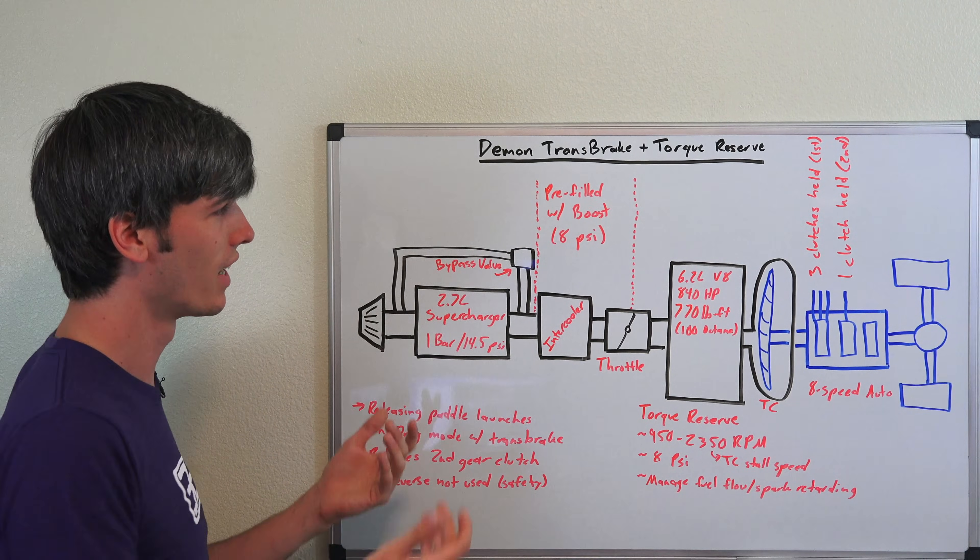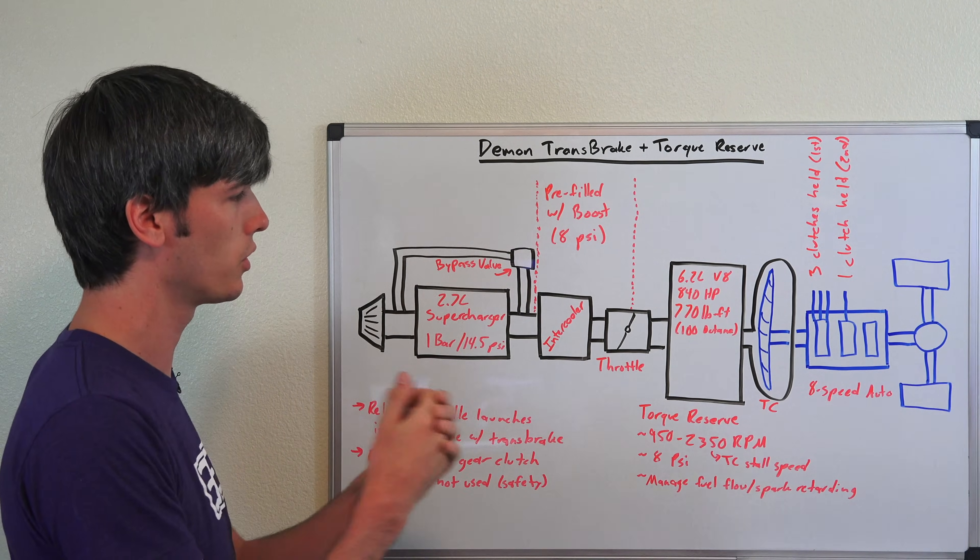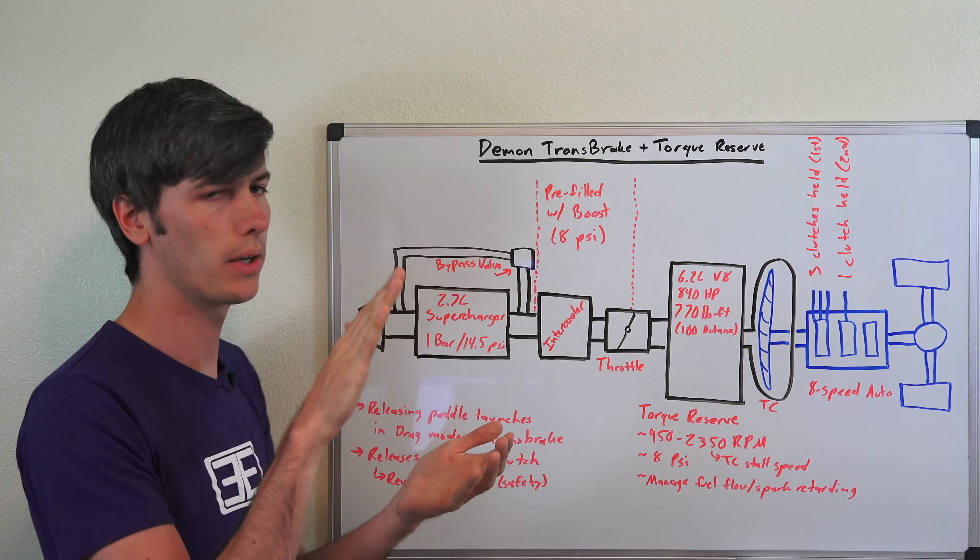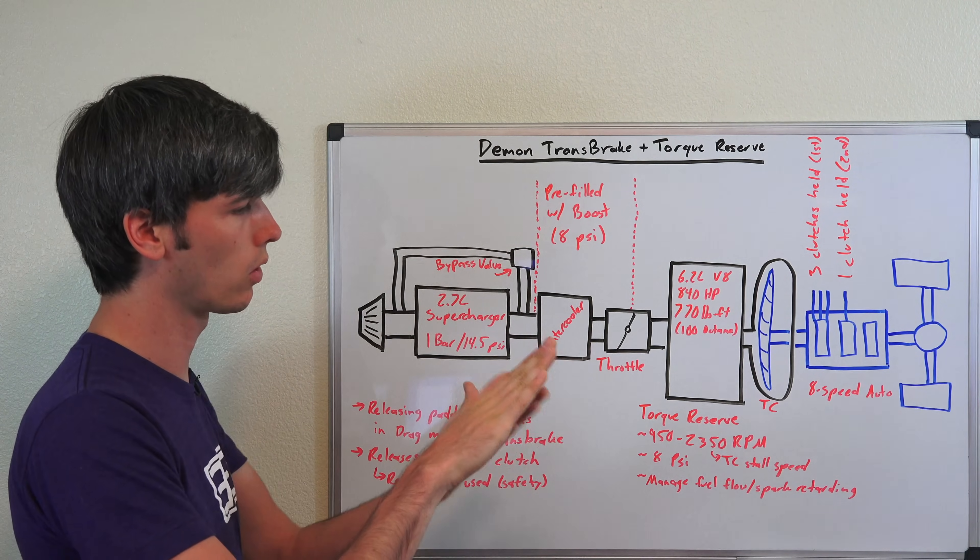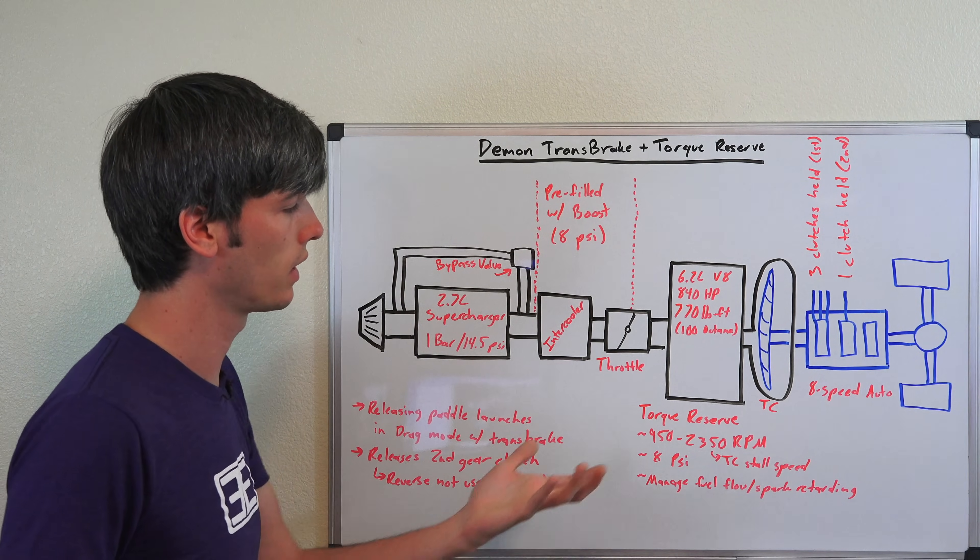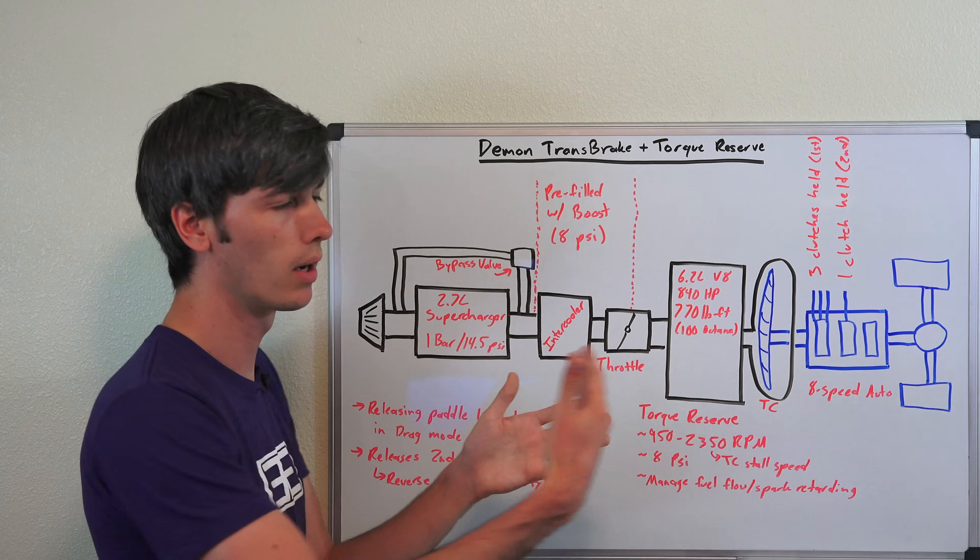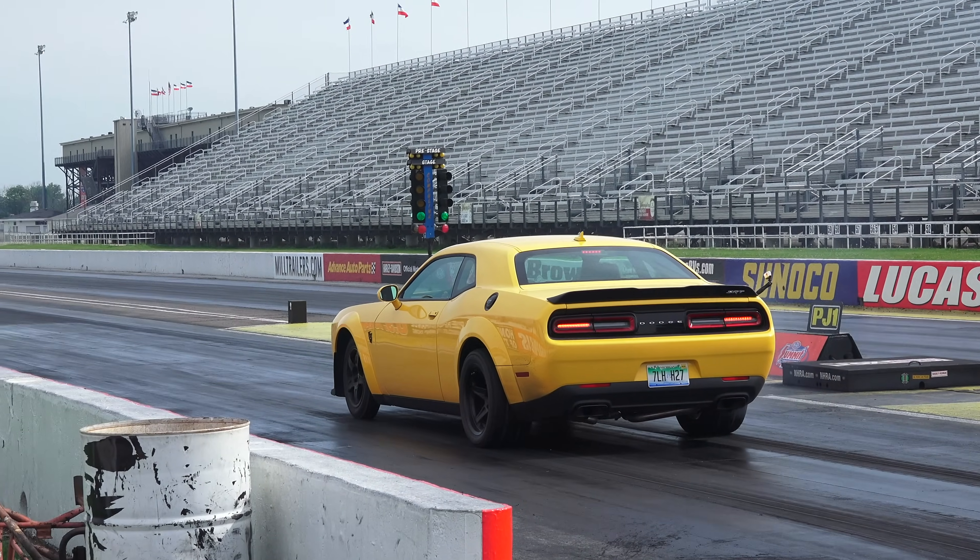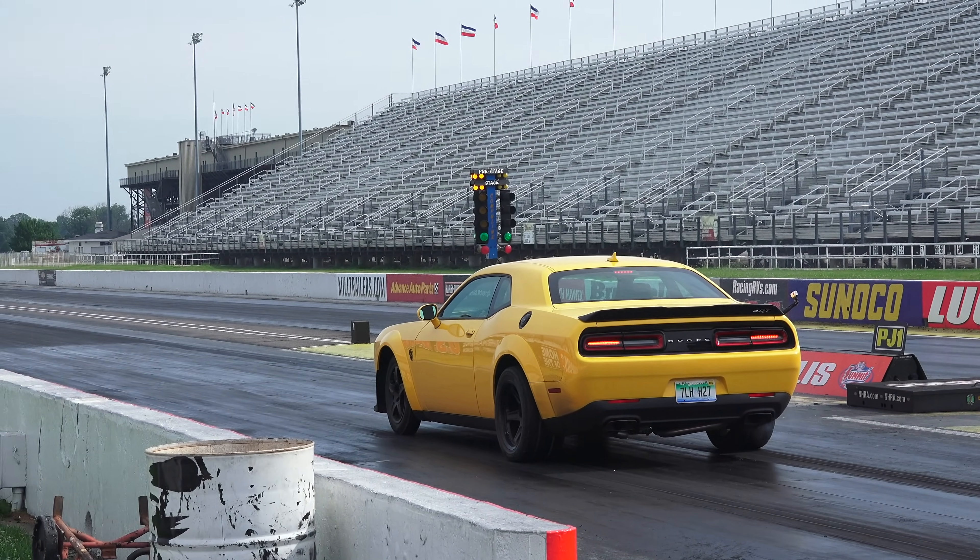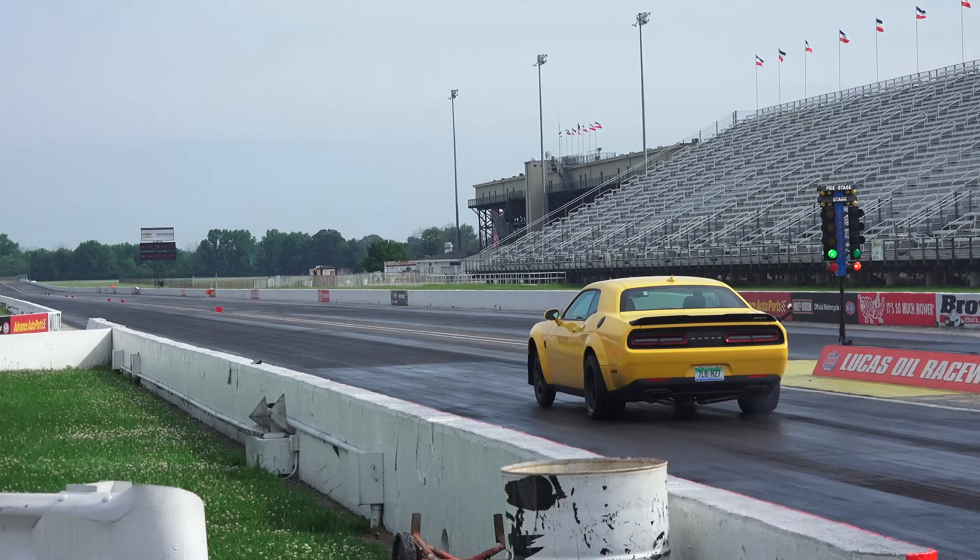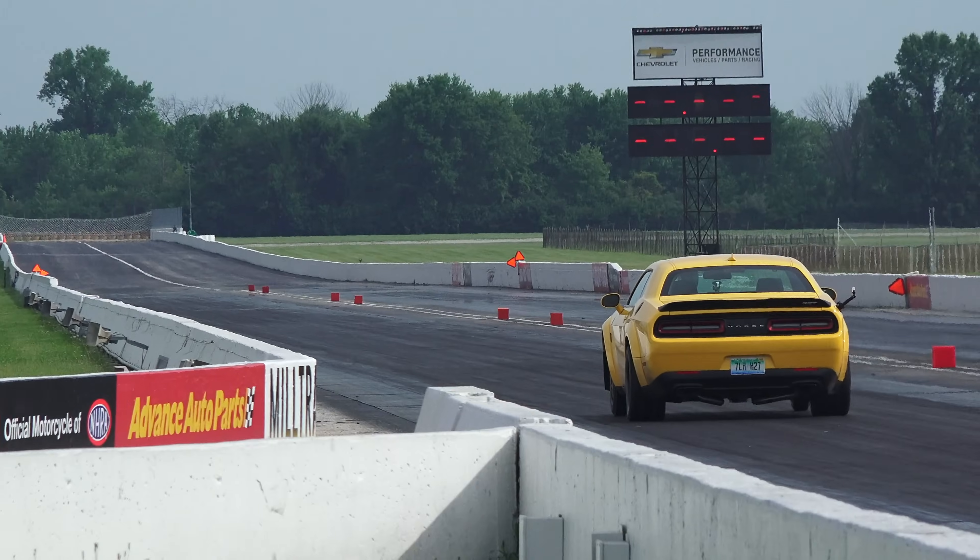So when you put it in this drag mode, it is pretty cool. All you're basically doing, you're holding on to one paddle shifter and you've got your foot on the throttle holding it at a set RPM. Whatever RPM you deem between 950 and 2350 will give you maximum power but also not spin up the tires. And so in that mode, you're going to basically release once you get the Christmas tree coming down. You're going to release your paddle shifter and as soon as you release that, it's immediately sending torque to the rear wheels.